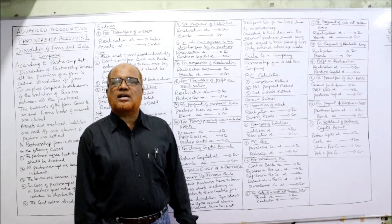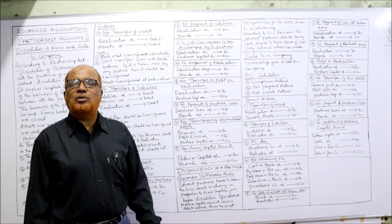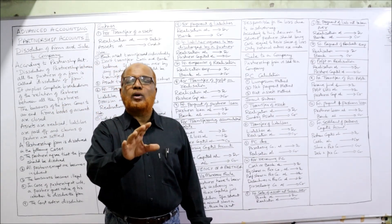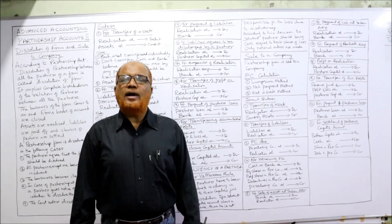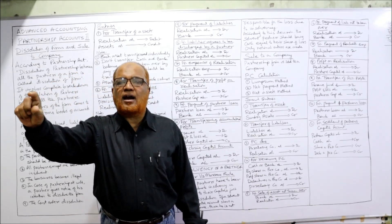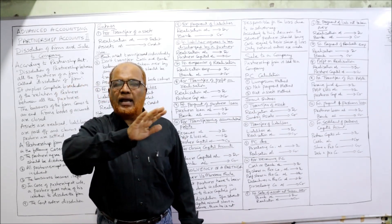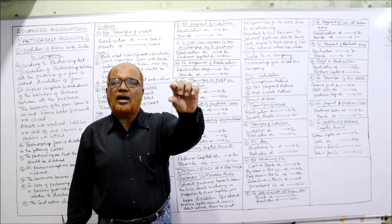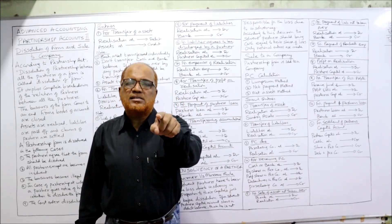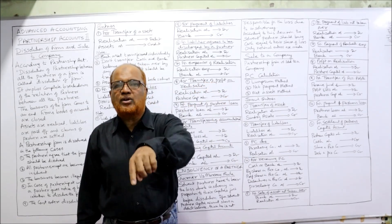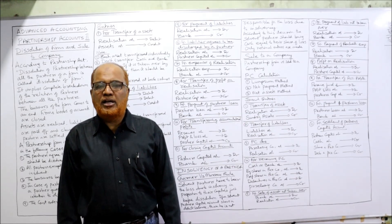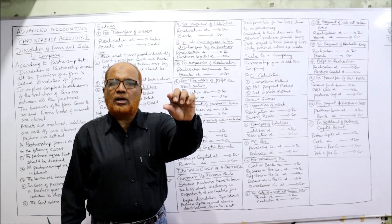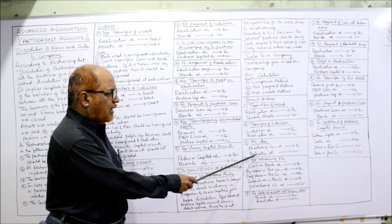Now, what are the general entries to be passed in the partnership when the business is sold to a company? First entry: transfer all assets to Realization, just like in dissolution. Entry: Realization Account debit, Assets Account credit individually. All assets get closed at book values. Second entry: transfer of liabilities — Liabilities Account debit, Provision Account debit, Realization Account credit. Liabilities and provisions get closed and transferred to Realization. Third entry: purchase consideration due. The PC has to be received from the company. Entry: Purchasing Company Account debit, Realization Account credit.